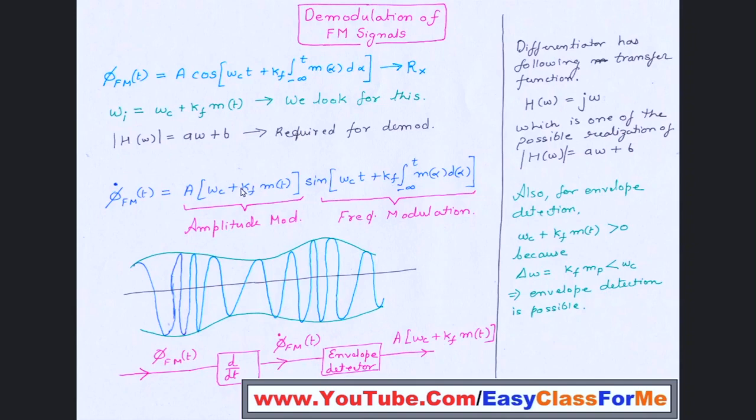So here you get readily the instantaneous frequency, which is present in amplitude portion. And in frequency modulated wave, it is present here, and instead of cos it will become sin because of the process of differentiation.